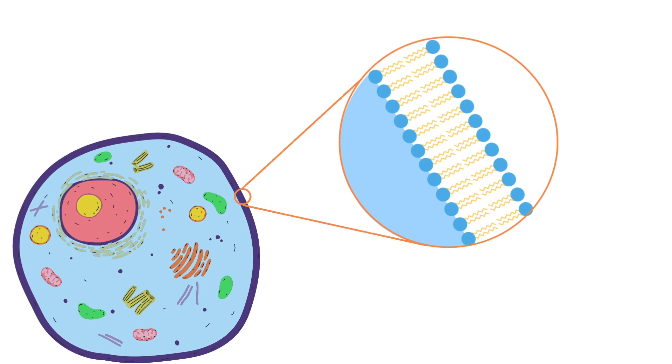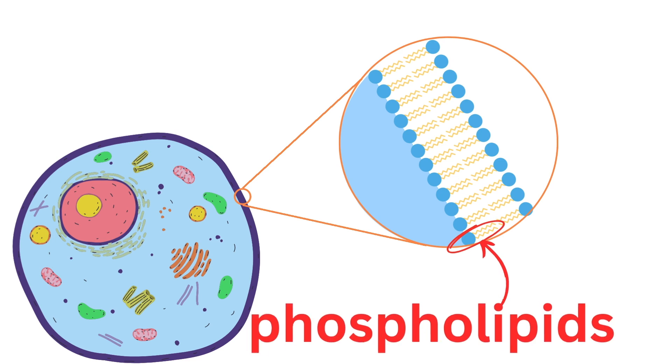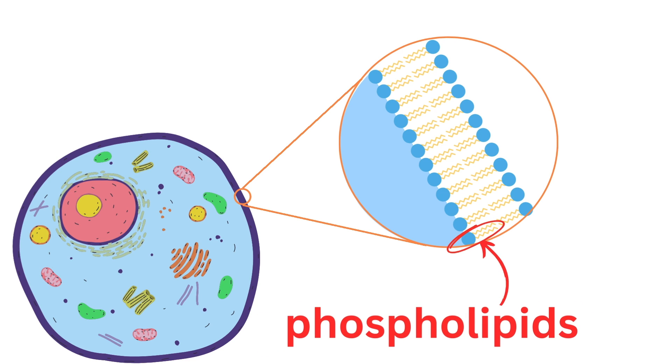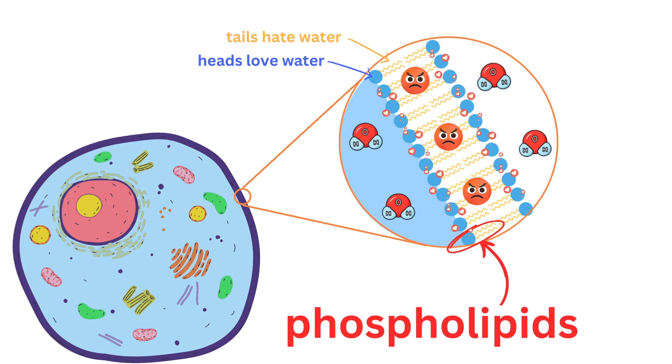The cell membrane is made up of a double layer of molecules called phospholipids. These molecules have heads that love water and tails that hate water. The heads face outwards towards the water inside and outside the cell, while the tails face each other.